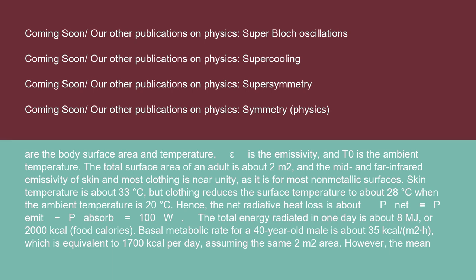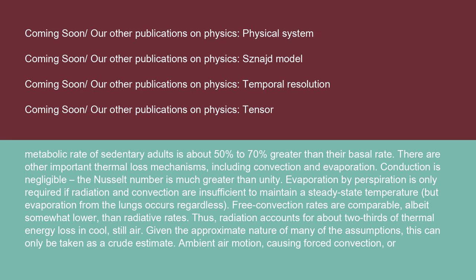Basal metabolic rate for a 40-year-old male is about 35 kcal/(m²·h), which is equivalent to 1,700 kilocalories per day, assuming the same 2 square meters area. However, the mean metabolic rate of sedentary adults is about 50% to 70% greater than their basal rate. There are other important thermal loss mechanisms, including convection and evaporation. Conduction is negligible. The Nusselt number is much greater than unity.